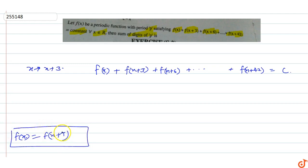So this becomes f(x+3), and f(x+3) becomes f(x+6), plus f(x+6), plus f(x+9), up to f(x+42). And f(x+42), when we replace x with x+3, becomes f(x+45), equals C.